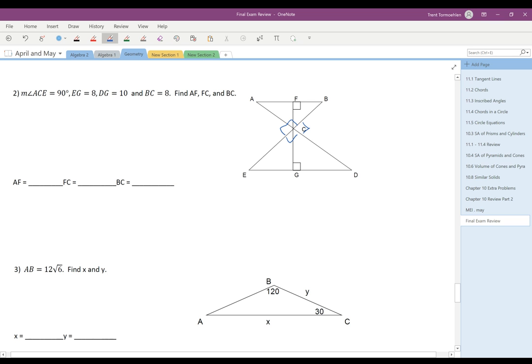and so we're going to use what we know about altitudes, GC, drawn to the hypotenuse EB of ED of right triangles. And we learned some things about that this year. So for this problem, you've got EG is 8, DG is 10, and then BC is 8.